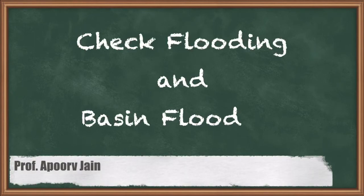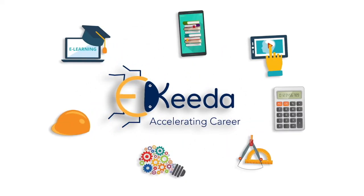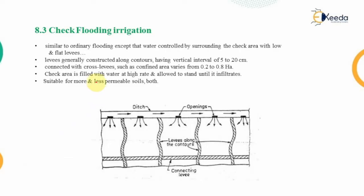In this video we are going to discuss the next two methods of irrigation: check flooding and basin flooding. In check flooding irrigation, we irrigate or flood the field, similar to ordinary flooding, except that the water is controlled. We build a check area around the water, and the water is flooded within this check area with low and flat levees.